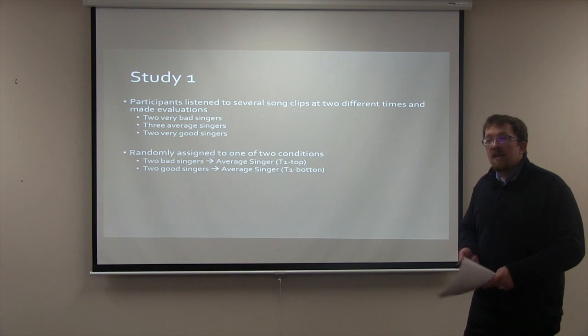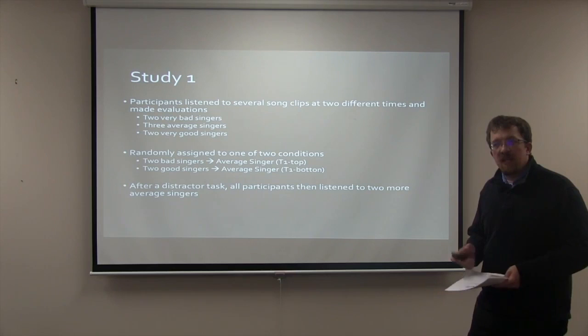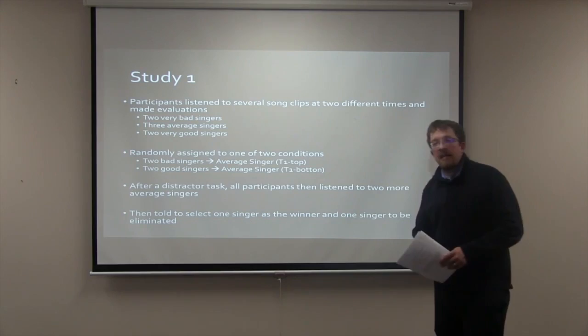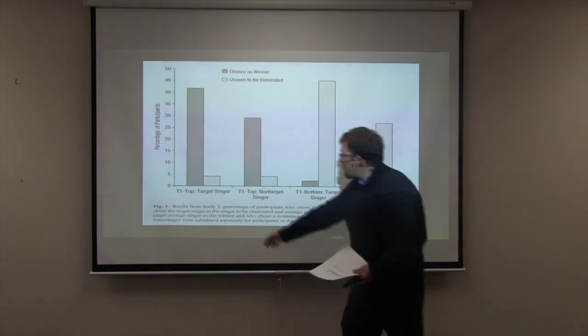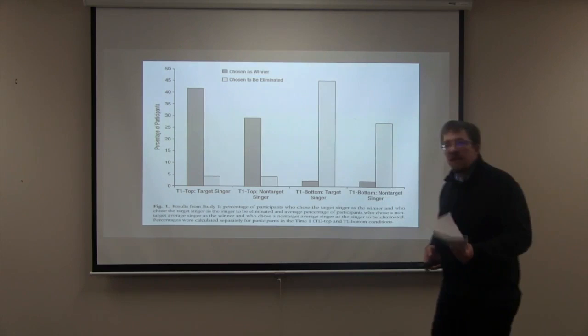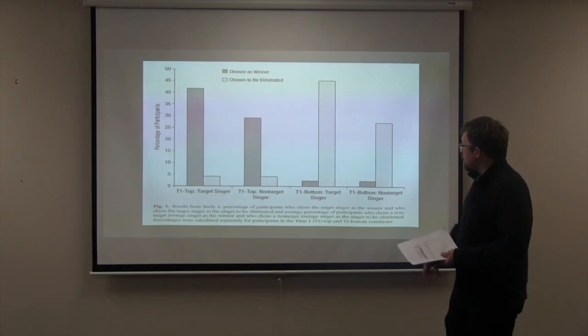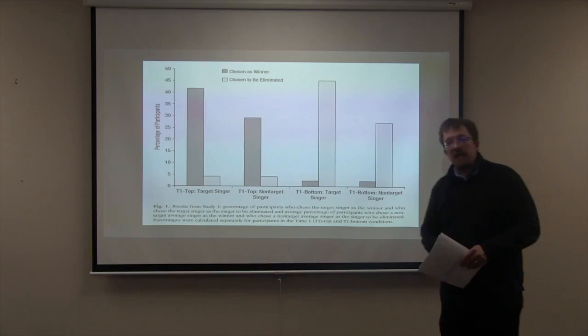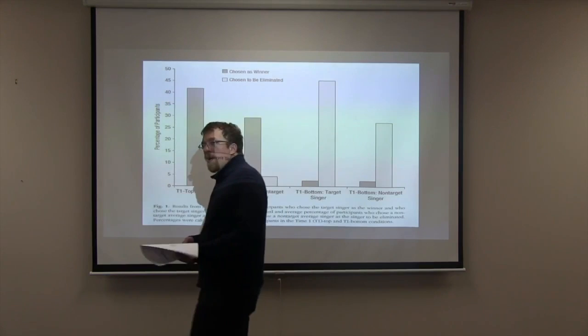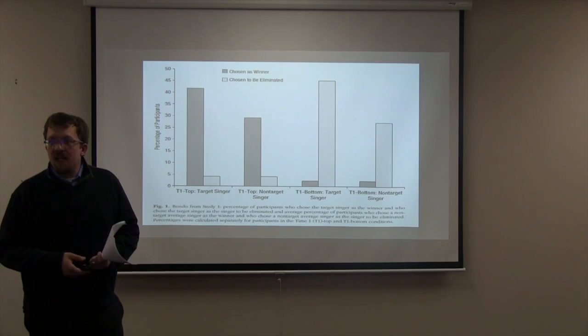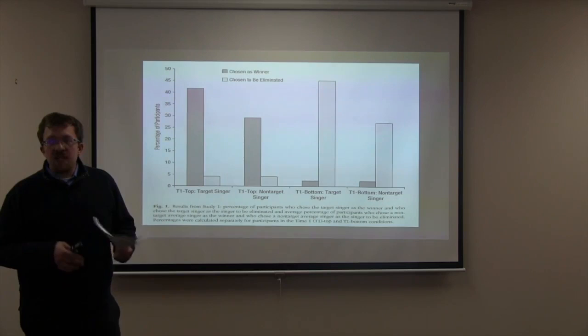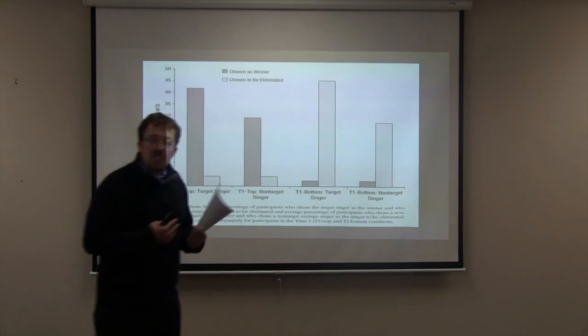After listening to these individuals, participants completed a distractor task and were then asked to listen to two more average singers, and were asked to select one singer to be the winner and one singer to be eliminated. As shown in the graph, when the average singer was paired with bad singers in the T1 top condition, the average singer was frequently selected to be the winner. However, when the average singer was paired with good singers in the T1 bottom condition, the average singer was frequently selected for elimination. The results demonstrate that the evaluation of the average singer depended on relative comparison to either the very good or very bad singer, and our initial relative evaluations do not change even after we are presented with new information, such as an additional average singer.